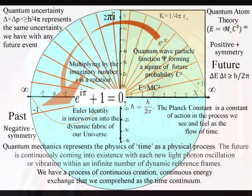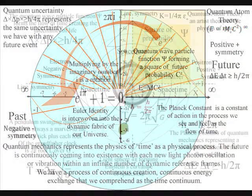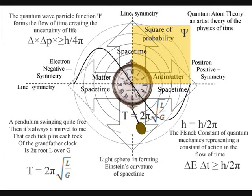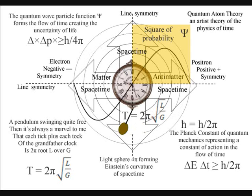I will start with this diagram, representing the flow of time. In the top left-hand corner, we have the equation known as Heisenberg's uncertainty principle, with 4 pi representing a sphere.